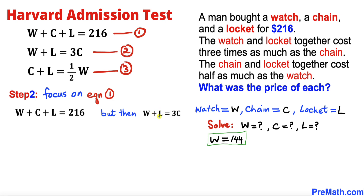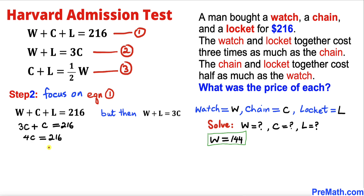Next, focusing on equation 1 again, we know from equation 2 that W + L = 3C. Replacing W + L with 3C in equation 1 gives us 3C + C = 216, so 4C = 216. Dividing both sides by 4, we get C = 54.